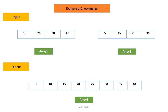Let's consider two-way merge. In this, k value is 2. The input for this two-way merge is two input arrays named array 1 and array 2. Array 1 contains four elements and array 2 contains four elements. Both arrays are already in sorted order. You have to combine or merge these two arrays into another array so that the resultant array is also in sorted form. This is the problem statement.